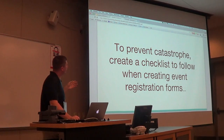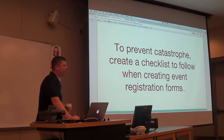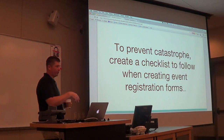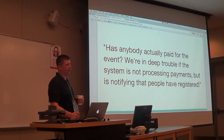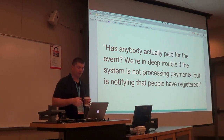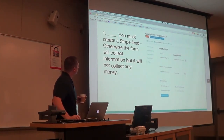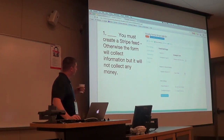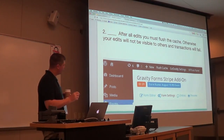This is just common sense — prevent a catastrophe. Make a checklist and make sure you follow it every time. It's good to put this in a Word doc that can be shared with other people you're working with. Has anybody actually paid for the event? We're in deep trouble if the system is not processing payments but is notifying people that they've registered. You've got to integrate your payment gateway when you make a new form. It's really easy to do, but it's really easy to forget. You can still have the item that takes credit card info — it looks like it'll work, but it doesn't.